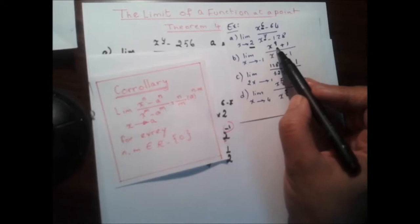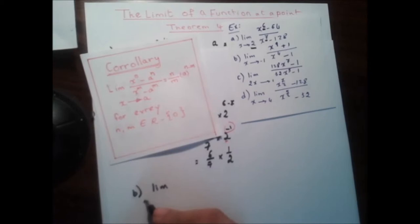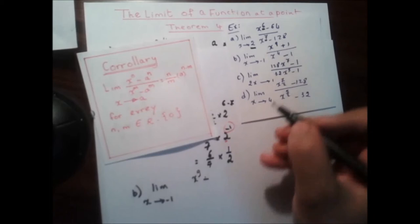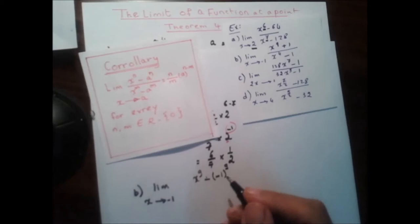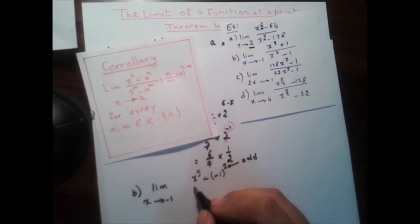Now another example. Find the limit as x tends to negative 1 of (x^9 plus 1) over (x^4 minus 1). Since we have a plus, we change it into minus form: x^9 minus negative 1. Since x has the power of 9 and 9 is an odd number, it keeps the negative sign, so negative 1 to the power of 9 equals negative 1.